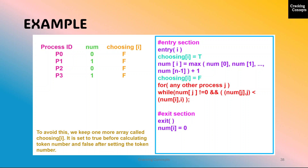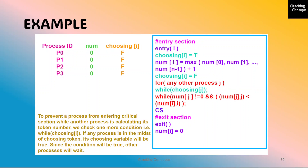To address this, we keep one more array called choosing. This was explained in the algorithm before. It will be set to true before calculating the token number and to false after setting the token number. To prevent a process from entering the critical section while another process is calculating its token number, this condition is added: just before the second condition, if any process is in the midst of choosing a token, its choosing variable will be true. Since the condition will be true, other processes will wait accordingly.